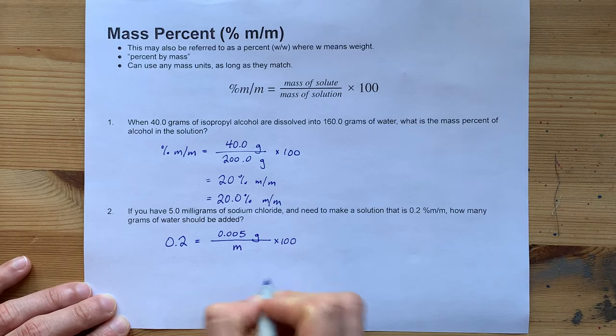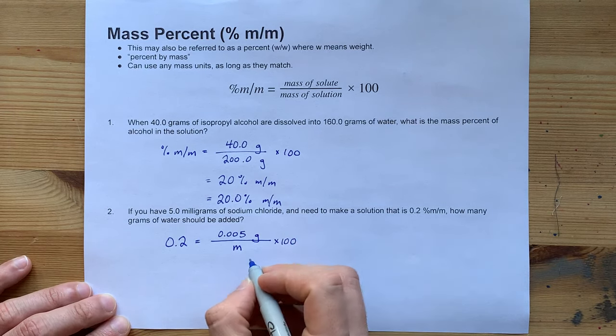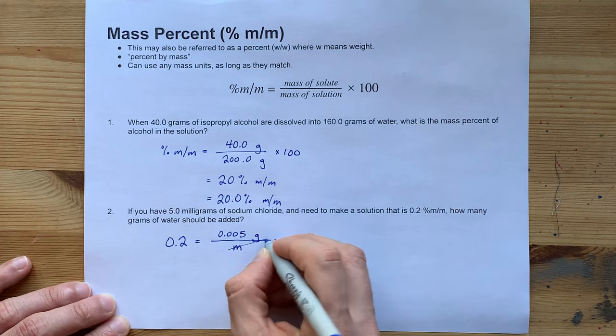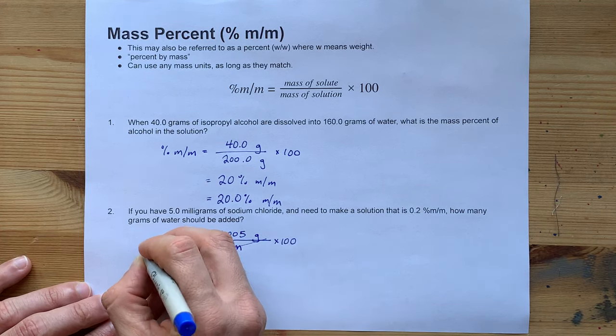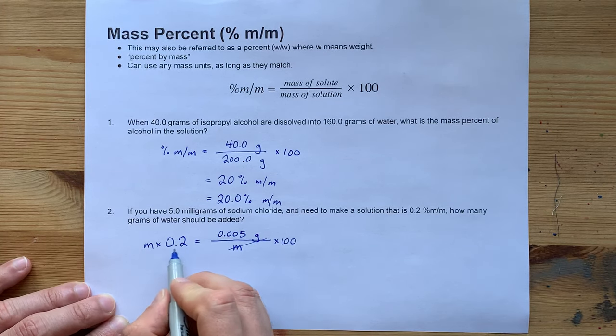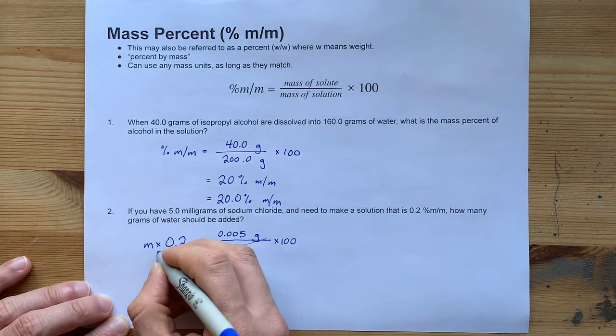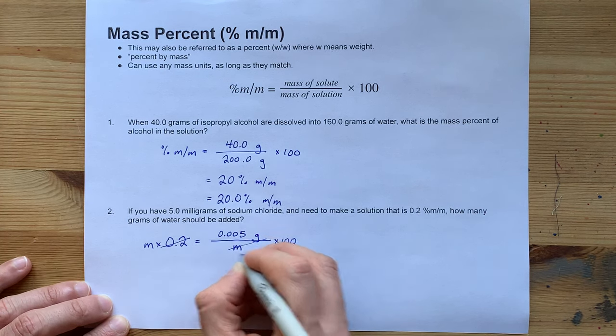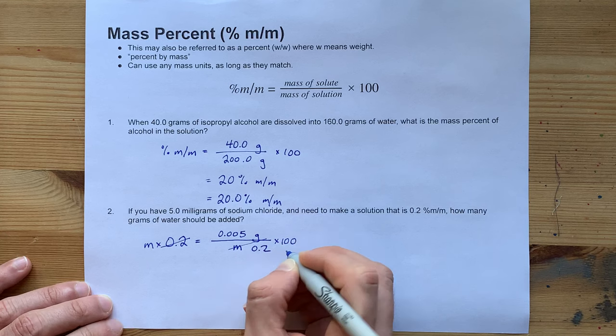Now in order to solve this equation, we're going to have to undo division by m on this side. We'll do that by multiplying the other side by m. And now to solve for m or isolate it, we can undo timesing by 0.2, and we get that by dividing by 0.2 on the other side.